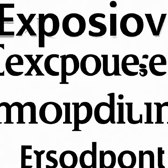Chapter Two of Economics in One Lesson focuses on the broken window fallacy — the misconception that destruction can be beneficial to an economy. Hazlitt explains that when a window is broken, it appears the glazier hired to repair it has benefited. However, the money spent on the glazier is money that could have been spent on something else, such as a new suit or a new book. Therefore, the broken window has actually caused a net loss to the economy.